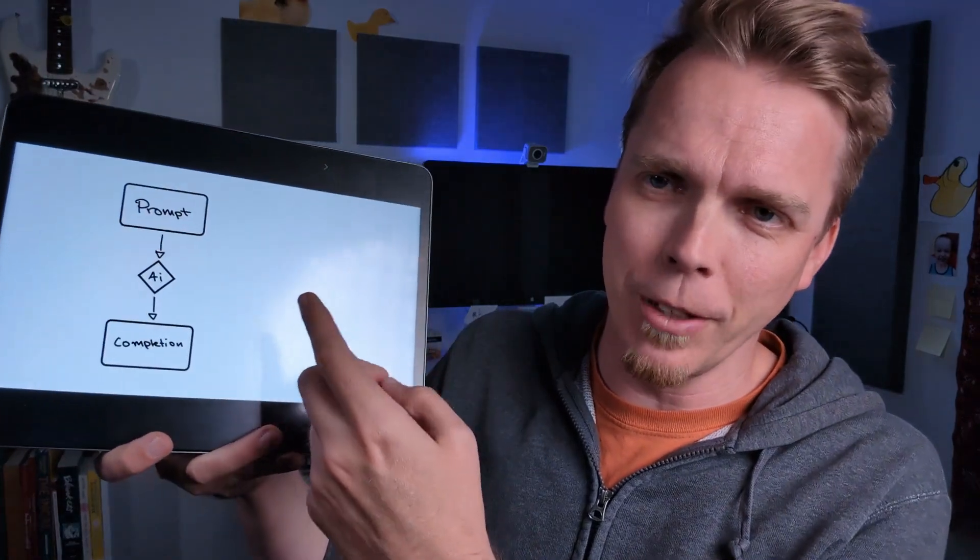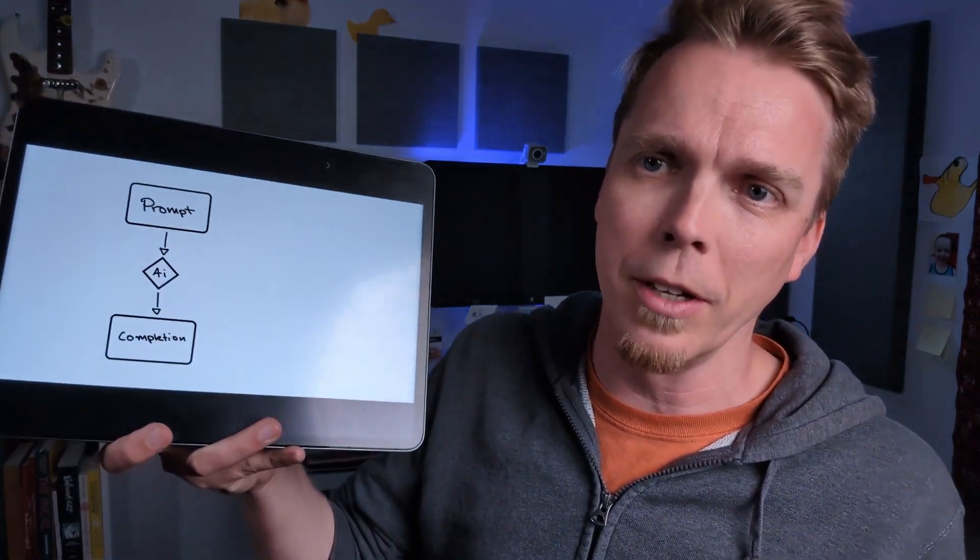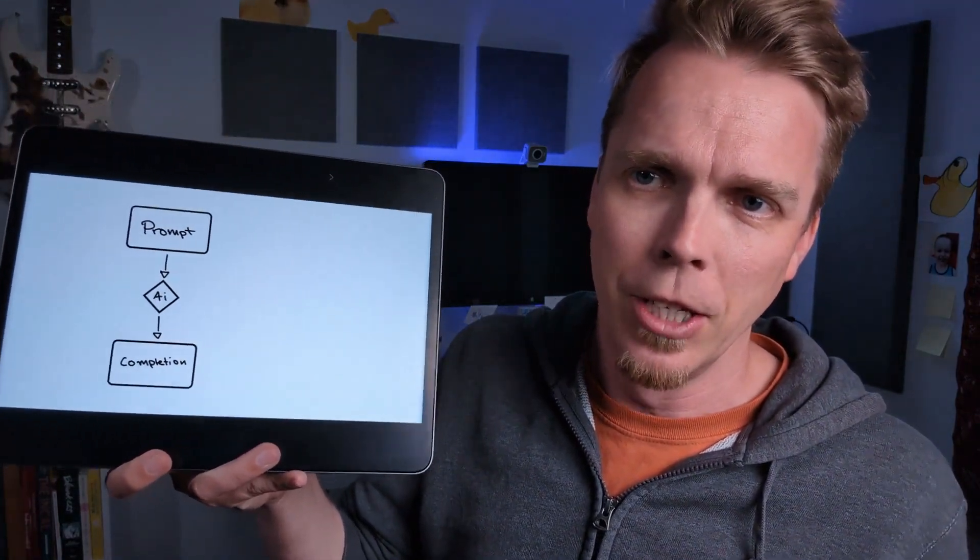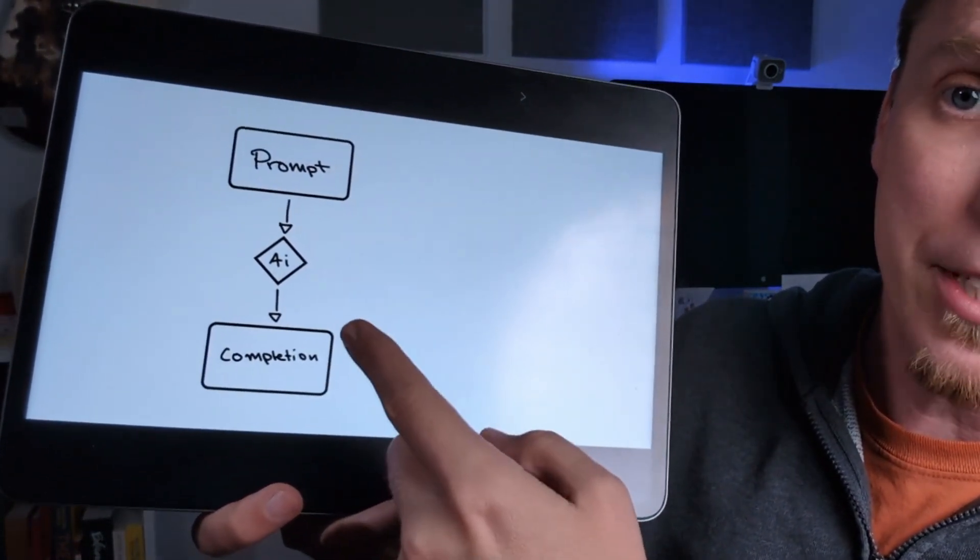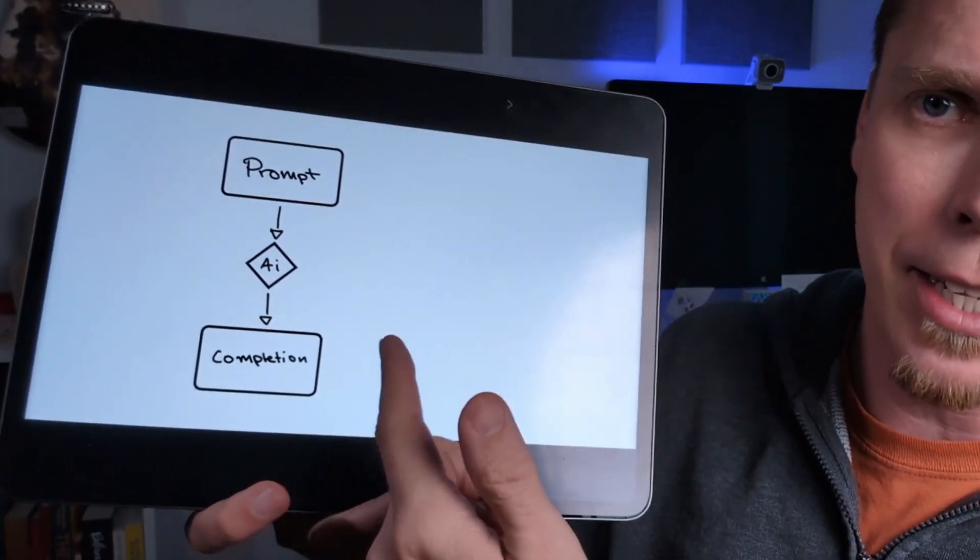Here's a very simplified drawing of what happens when you use an AI system like ChatGPT. You put in a prompt, the prompt goes to the AI system, and the AI system creates a completion. This is the response that comes out of the AI system.